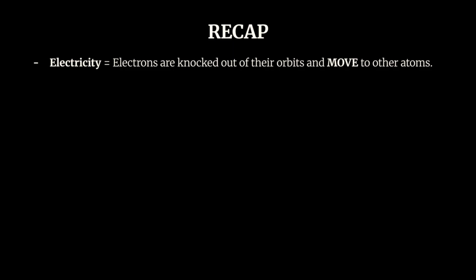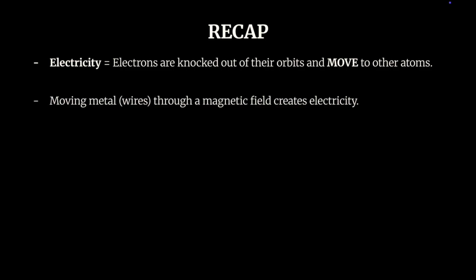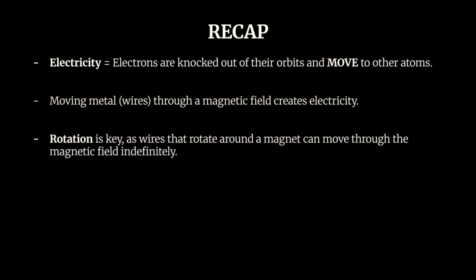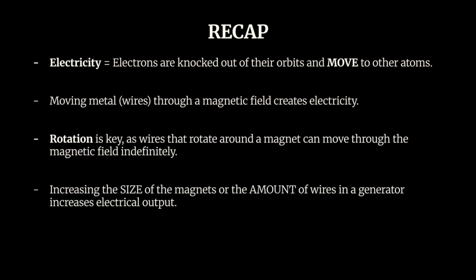To recap: electricity is what happens when electrons are knocked out of their orbits and moved to other atoms. This is achieved in a generator by moving wires through a magnetic field, which is best done through rotation. More wires and larger magnets create more electricity, so powering a city means scaling up. Now you know the basics of electrical generation, and if you give me just three more minutes of your time, I'll explain how different power plants use different methods to keep their generators running.